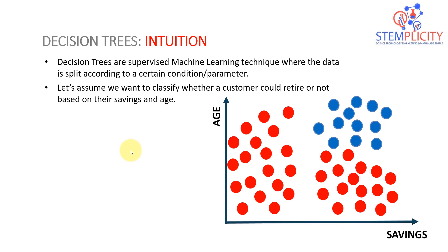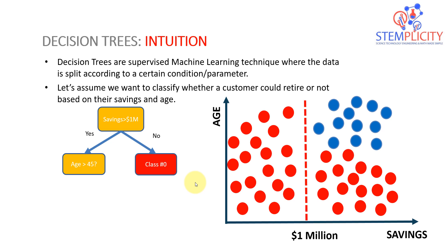In a very simple form, imagine you're an experienced senior banker. Based on your knowledge and experience, you can ask very simple questions. The first question is: are your savings greater than one million dollars? It's a simple yes or no question. If the customer says their savings are less than one million dollars, you classify them as class zero.